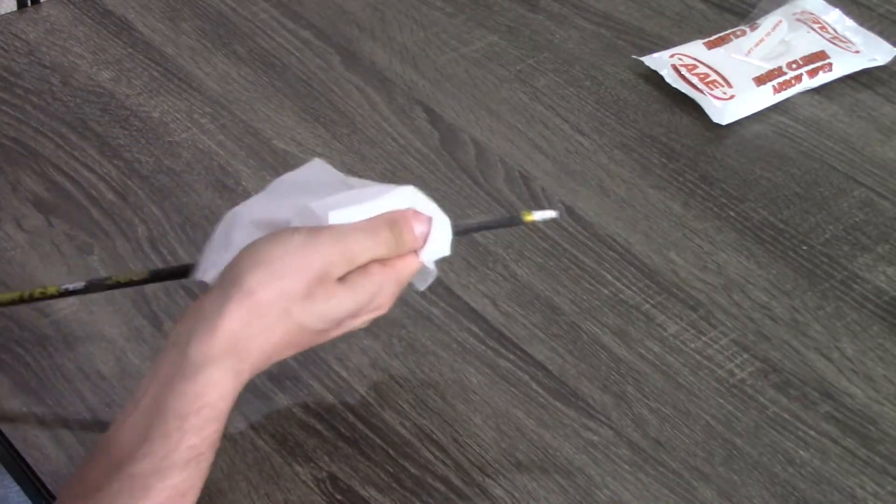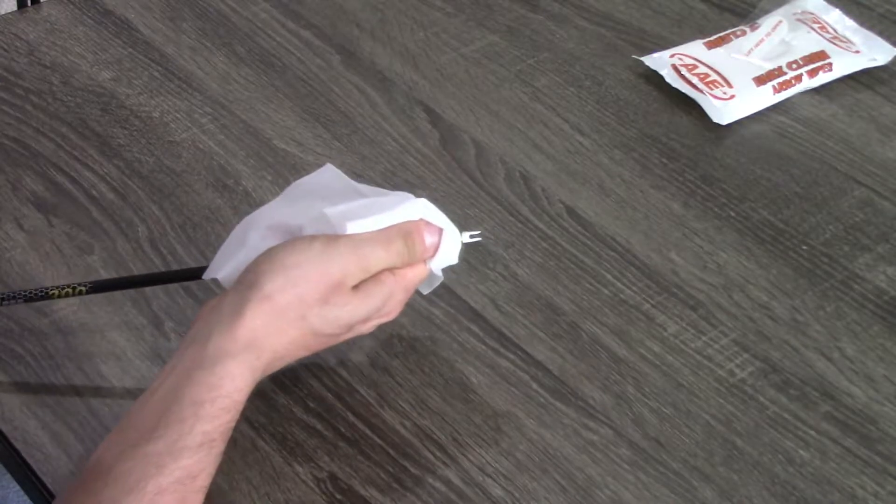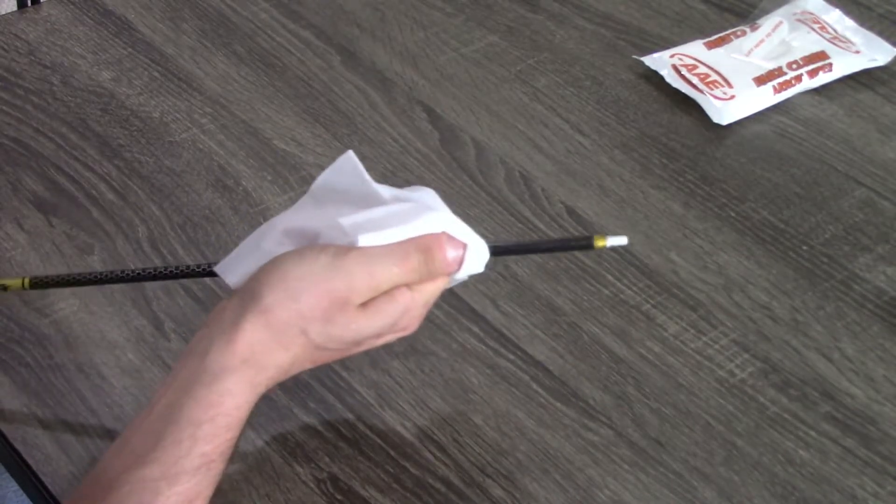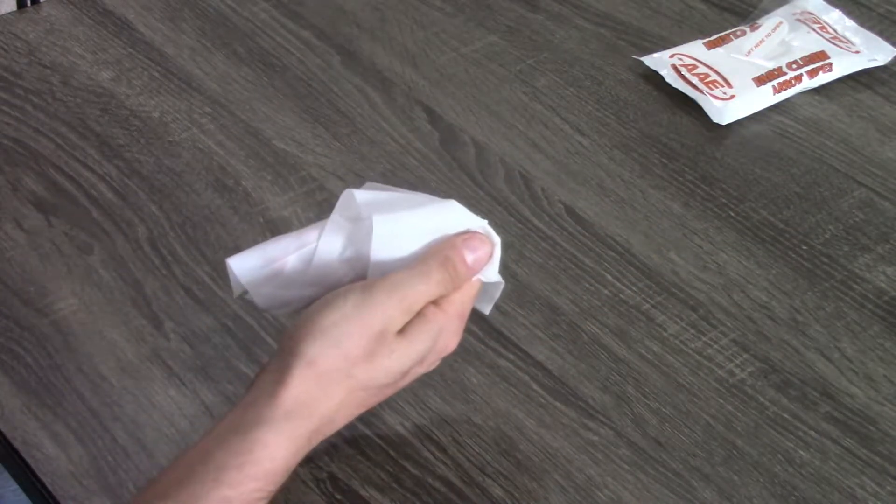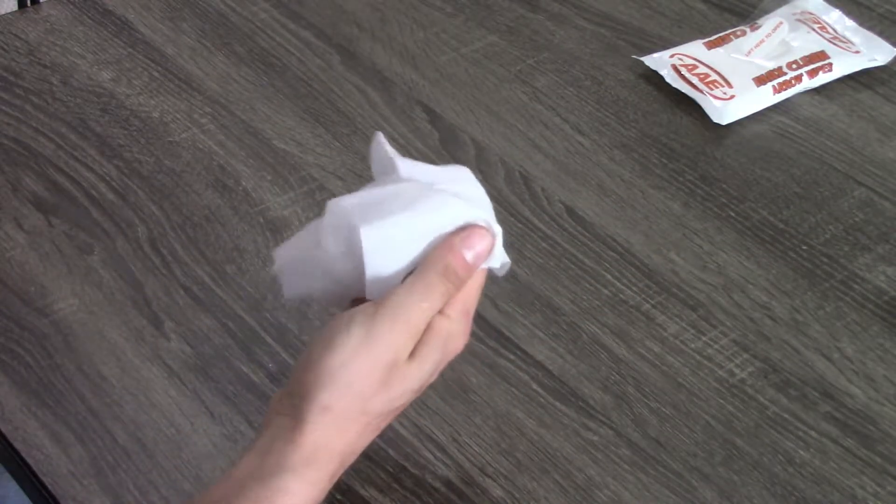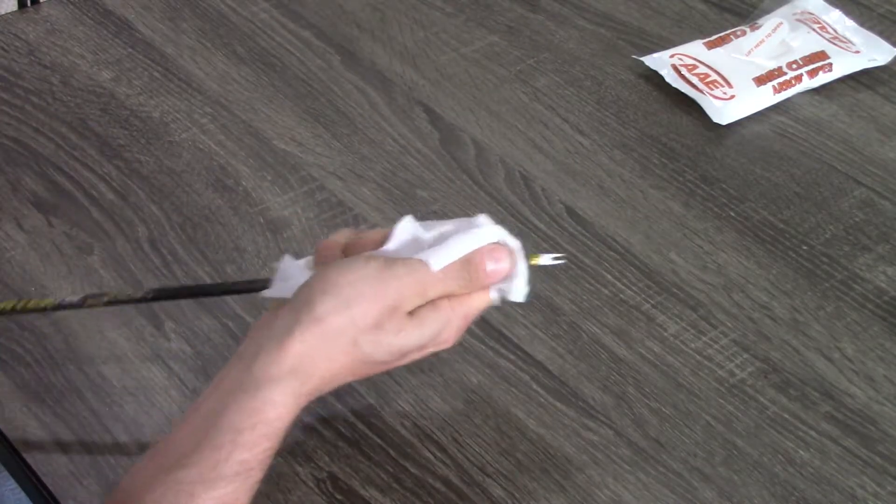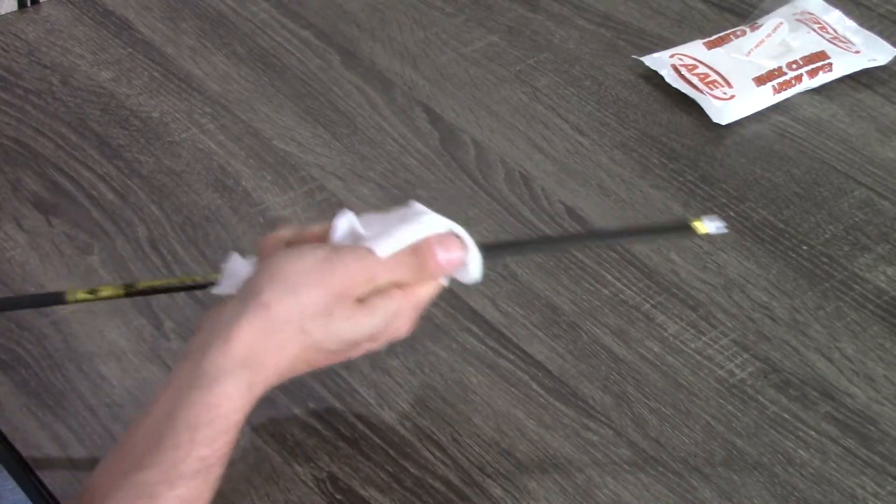They came in a kit. So I'm going to clean the last seven to eight inches where the wrap is going to go with these wipes. I'm going to do all four shafts, and then I'm going to let them dry just for several minutes until they're visibly dry, and then I'll install the wraps.